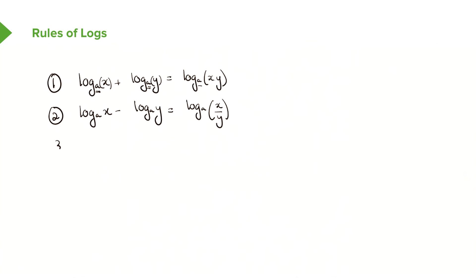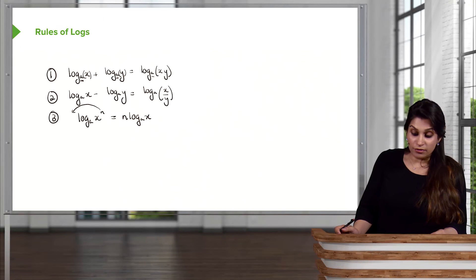The last rule is one of the most useful rules when it comes to solving for exponentials. If you have log base a of x to the power of n, you are allowed to bring this n to the front. No other mathematical function really allows you to do that. So you can bring the power down and rewrite this as n times log base a of x.